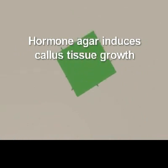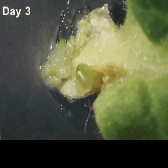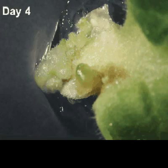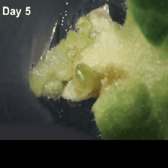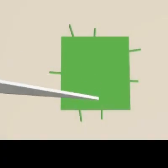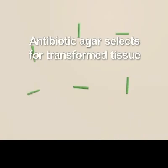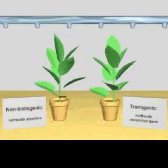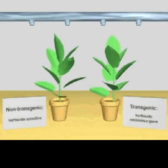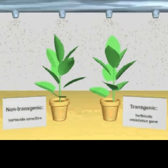The explants can be further cultured under sterile conditions on agar plates to form a callus, which is an undifferentiated mass of cells. The transformed callus can subsequently be cultured on agar plates containing the appropriate plant hormones and antibiotic to select only those plants that have been transformed.